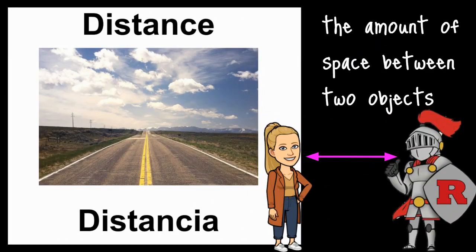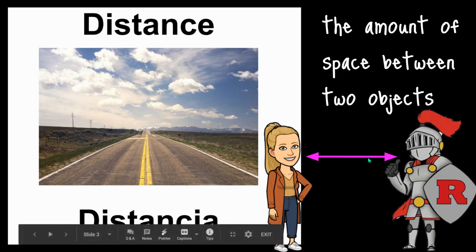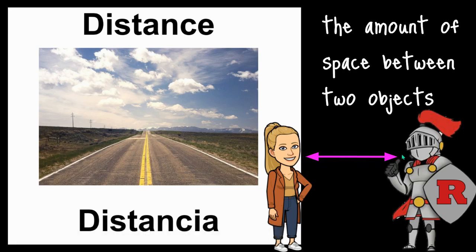Our second word is distance. Distance is the amount of space between two objects. In this example, where you start is a far distance from where you need to get to. And over here you can see that I am a distance away from our red knight.